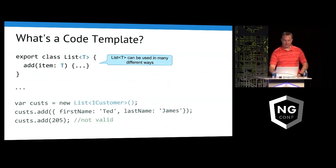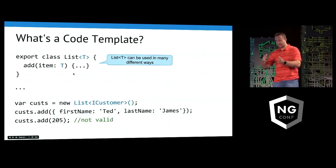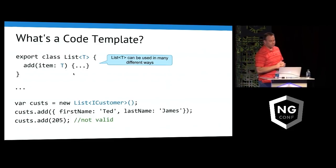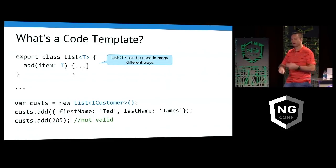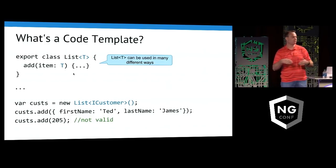To use this would look like this. You could say new list of iCustomer in this case. That's the interface I showed earlier. What that's going to do for us now is I can make a list of number, a list of customer, a list of this, a list of that, whatever I want, and reuse this over and over.